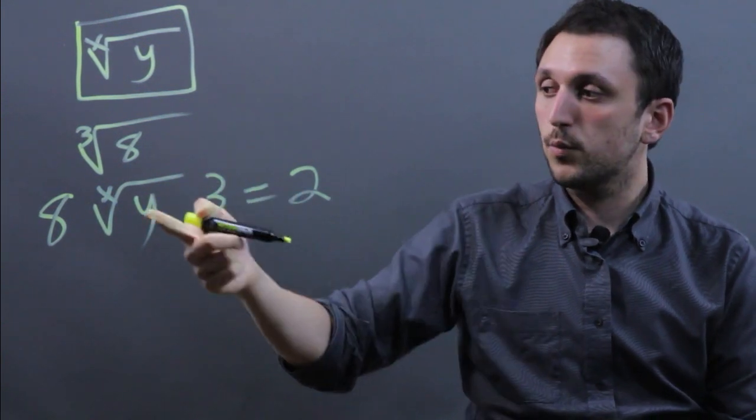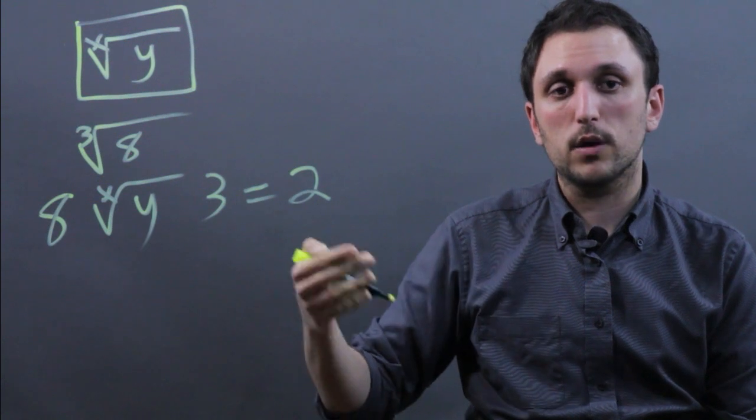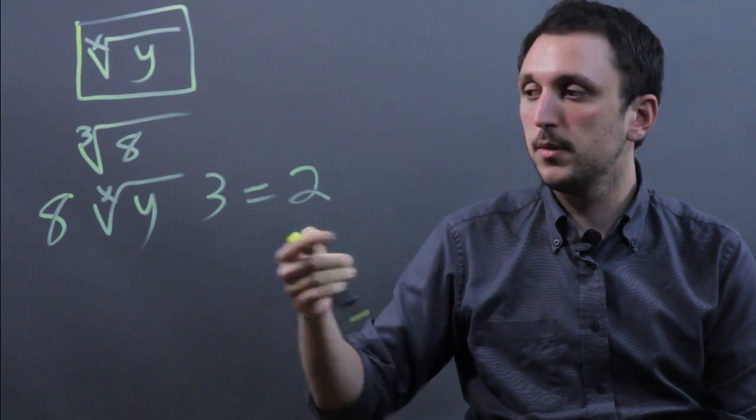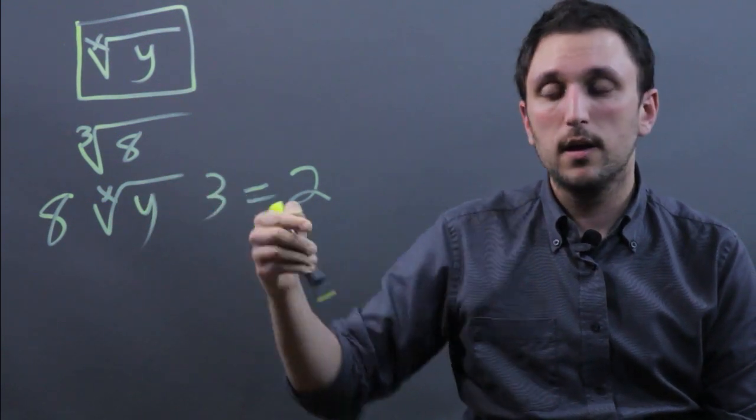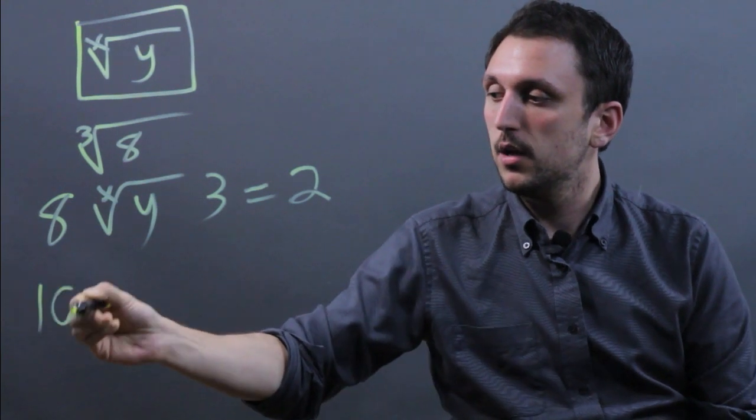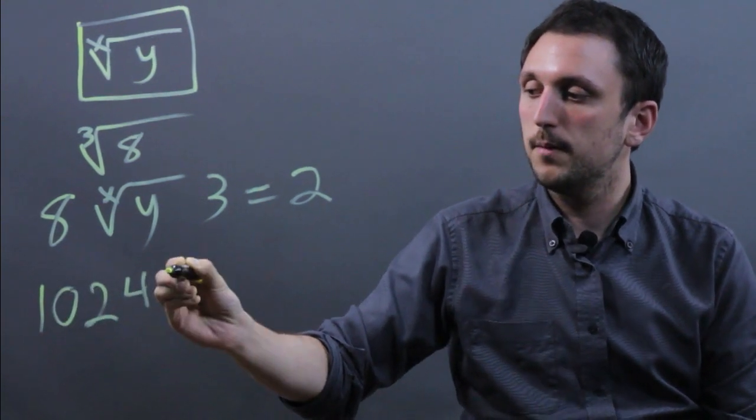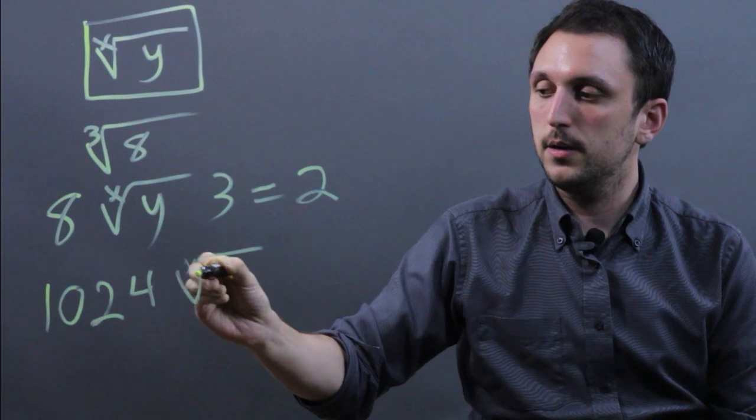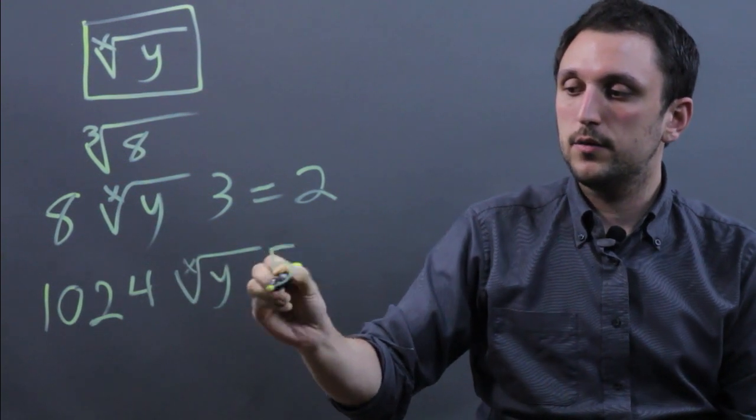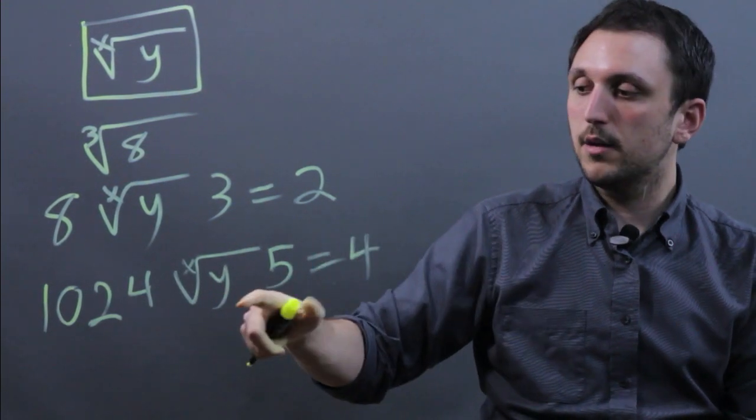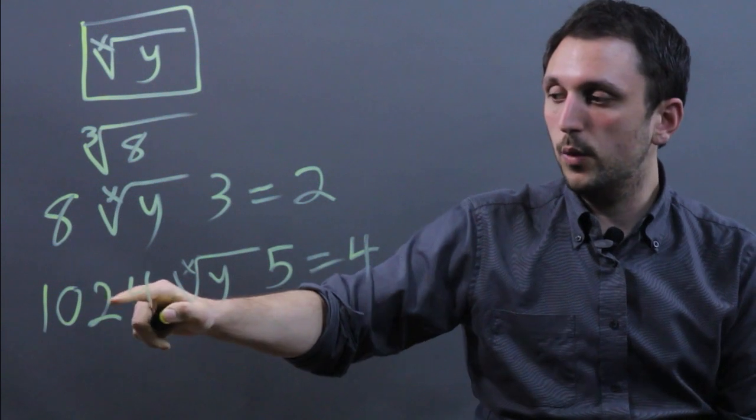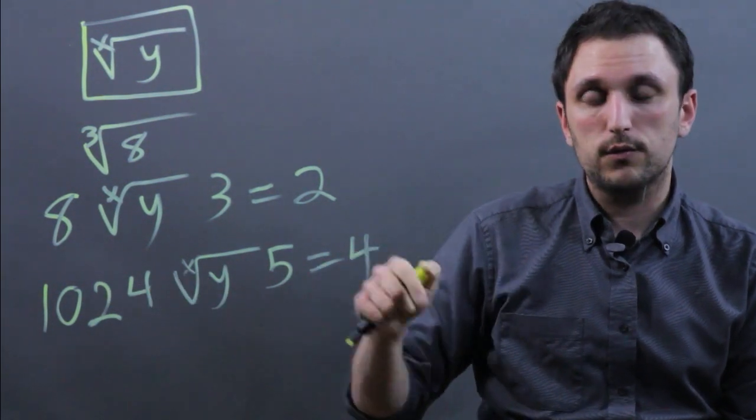Now this works not just for cubes, but it can also work for any root that you want to take. That's why they call it x root y. For example, if we typed in 1,024, and then the x root y button, and then 5, we would get 4. Because the fifth root of 1,024 equals 4.